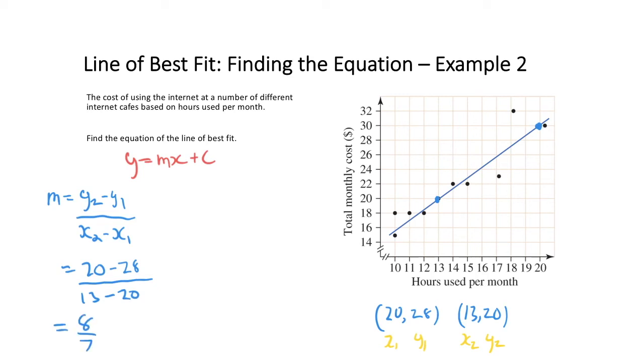Now that I have my gradient I can go ahead and calculate my y-intercept. Substituting in the value of the gradient into my equation, y is going to equal 8x over 7 plus c. So choosing a set of x and y values to substitute in, 20 is going to equal 8 times 13 over 7 plus c. So 20 equals 14.86 plus c. Therefore c is going to equal 5.14.